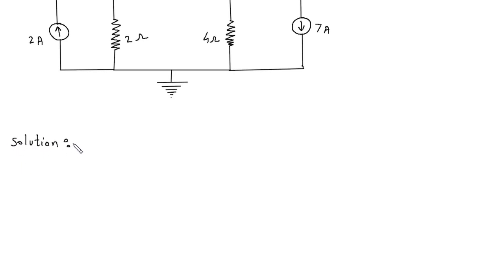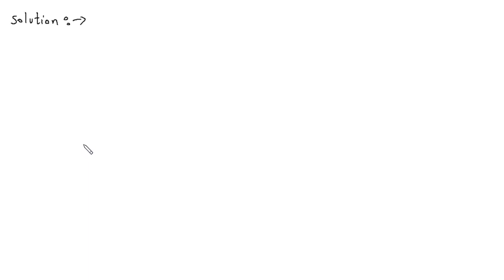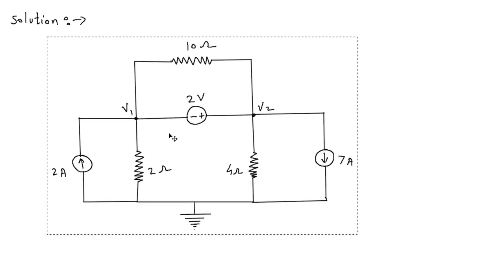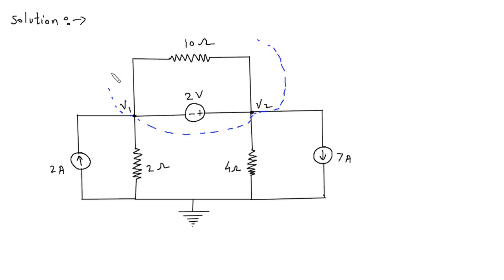For the solution, first of all we will redraw the circuit. Here we can see there is a supernode between node v1 and v2 — from here to here, this is a supernode.